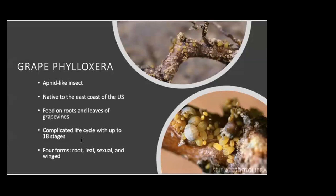Now we're going to move on to the order Hemiptera. Hemipterans undergo incomplete metamorphosis and have piercing-sucking mouthparts — they don't have chewing mouthparts; they pierce into the plant material and suck out the juices. Adults and nymphs have very similar feeding habits.